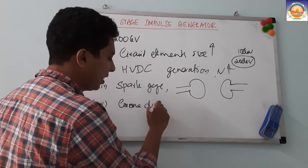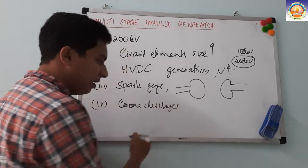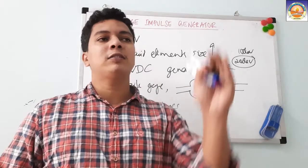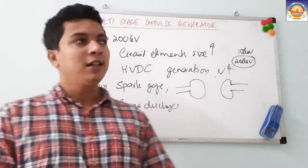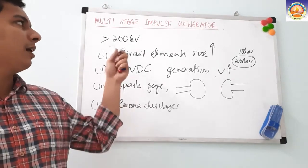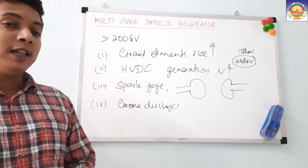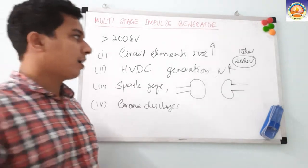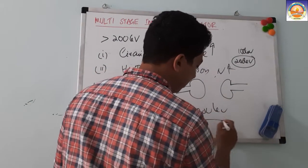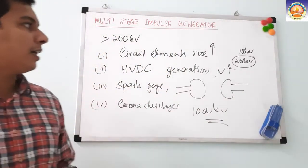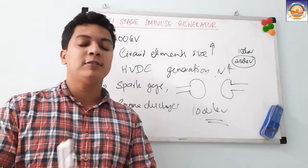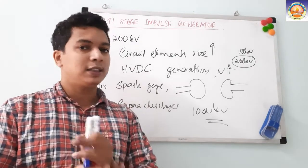Another problem is that corona discharges can happen in the leads when each component has such a high voltage rating. Due to all these problems, we have to think about a multi-impulse generator, because for lightning impulse we are talking about 1000–1400 kV, and to generate that we cannot use a single-stage impulse generator.